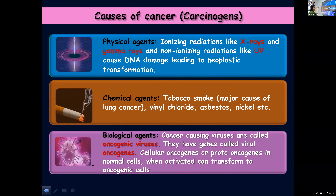Moving on to the second category — chemical agents. Tobacco smoke is considered to be the most important cause of lung cancer. Other chemical agents include vinyl chloride, asbestos, and nickel. Regular smoking of tobacco, or regular exposure to vinyl chloride, asbestos, or nickel can result in cancer and tumor formation.